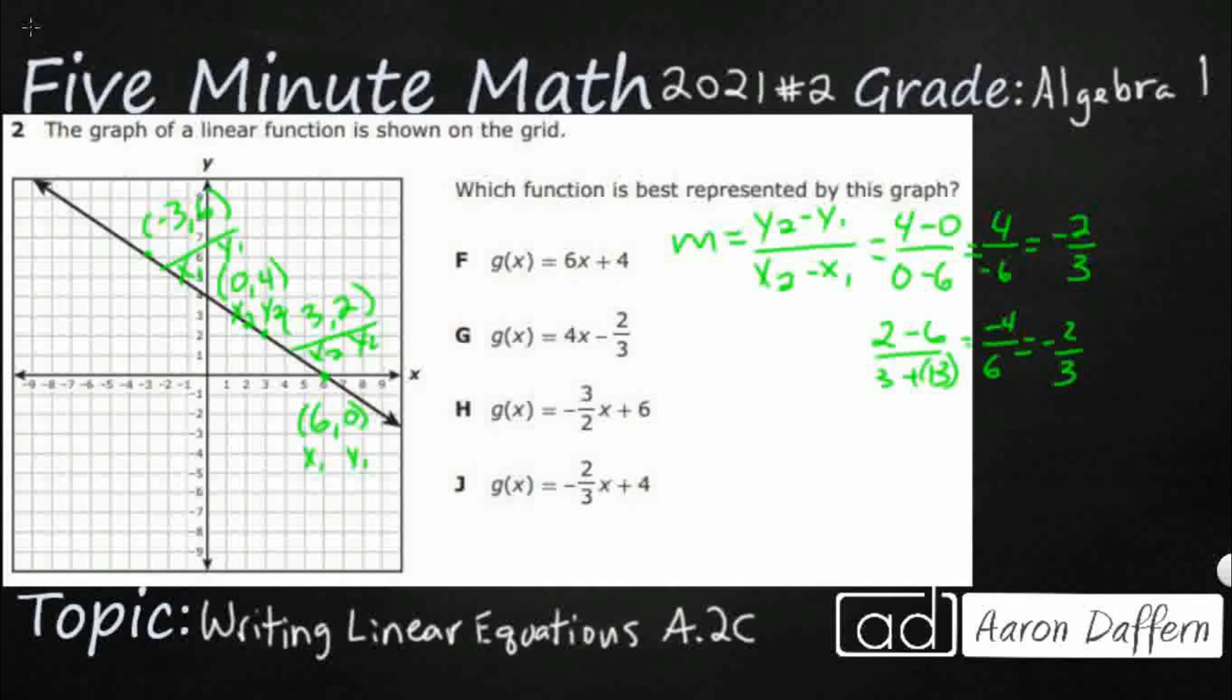So that's what our m is, our slope. So we're looking at the slope intercept form, y equals mx plus b. And so now we've got this negative two thirds. That's our slope. And so we simply need to find the y intercept.